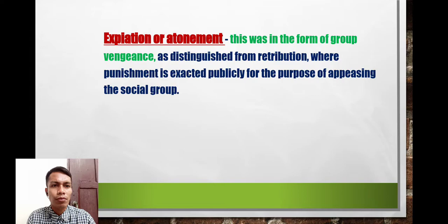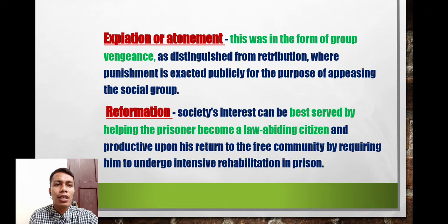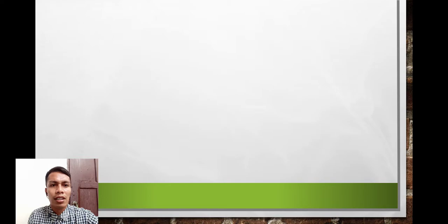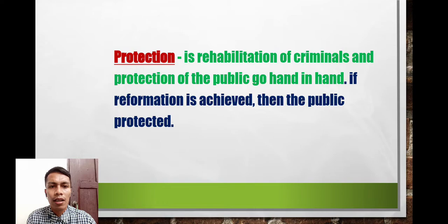Atonement was in the form of group vengeance, distinguished from retribution, where punishment is exacted publicly for the purpose of appeasing the social group. Reformation holds that society's interest is best served by helping the person become a law-abiding and productive citizen upon return to the free community, by requiring them to undergo intensive rehabilitation in prison. Protection recognizes that the rehabilitation of criminals and protection of the public go hand in hand — when an offender is housed in a confinement facility, the public is protected from harm.